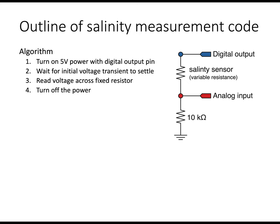Here's the basic steps in the measurement of salinity. The algorithm is to turn the power on, and that's done by setting our digital output pin high. We wait a little bit for the voltage to settle. There's a transient with this sudden change in voltage from 0 to 5 volts at this power. We read the voltage across the fixed resistor, and then we turn the power off. So this happens every time we make an individual reading.